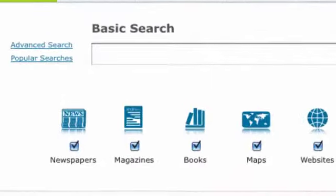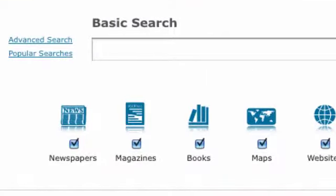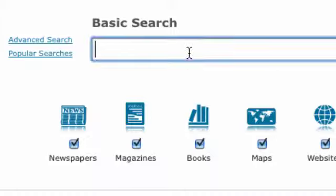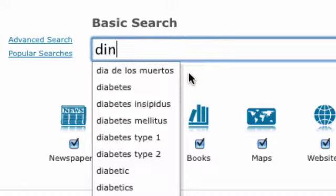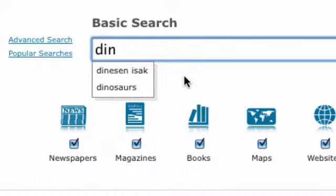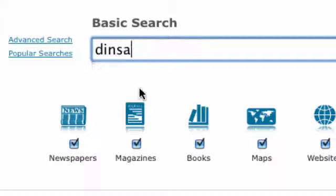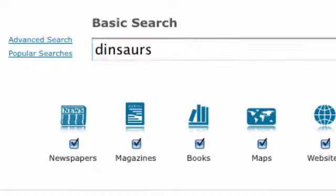Best of all, it's easy. Anyone can start connecting to appropriate content with just a basic search. It starts with type-forward technology that displays common terms based on the letters entered. When you see the term you want, highlight and enter to populate the search box. Even if you think you know how to spell a word, Spellcheck is still there to catch any mistakes.